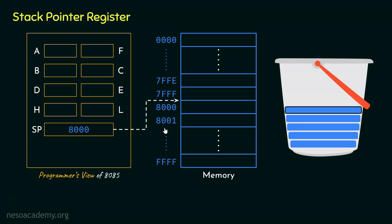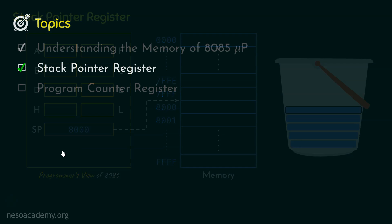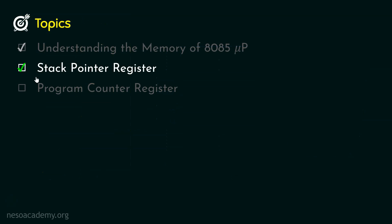The stack pointer register is mostly used during function calls, and we will learn how that works in our later chapters. Do remember, it is a 16-bit register which stores memory addresses.